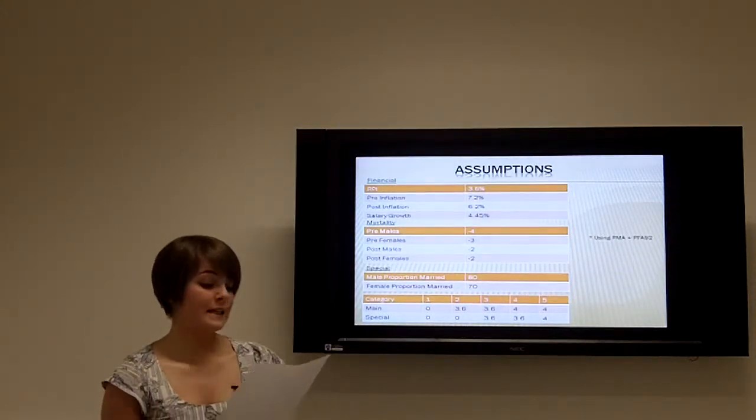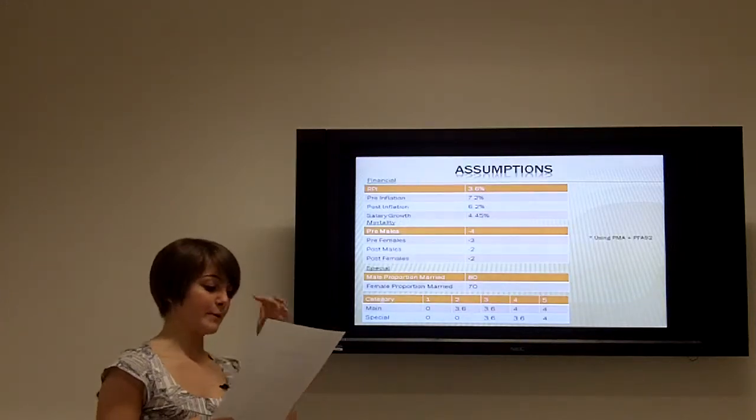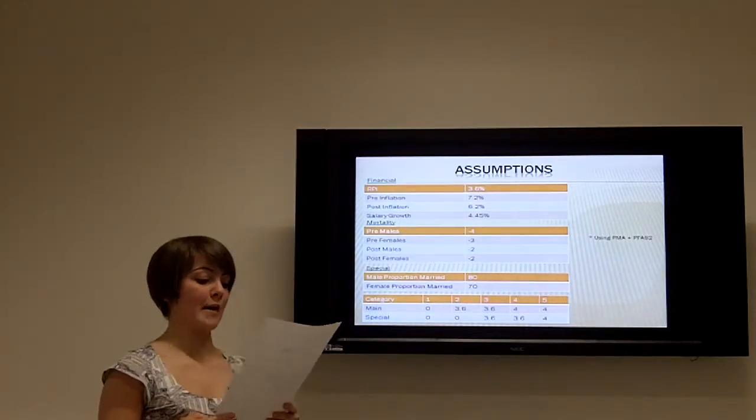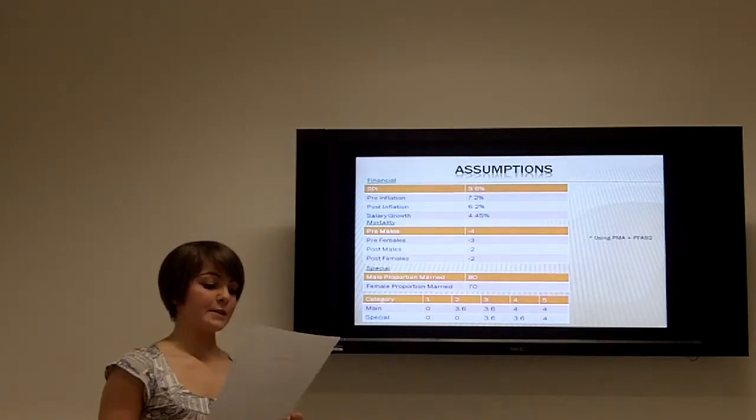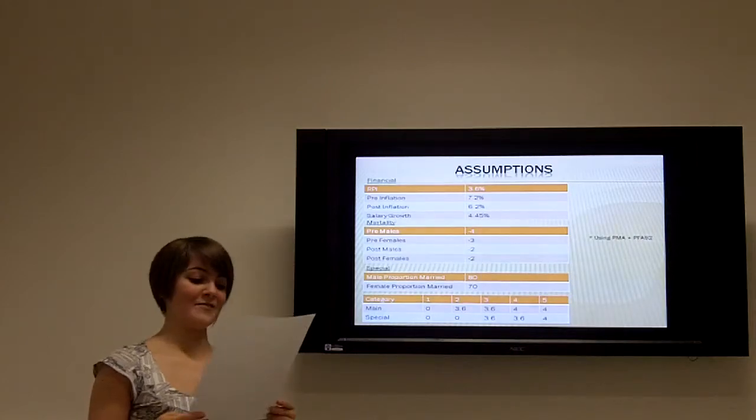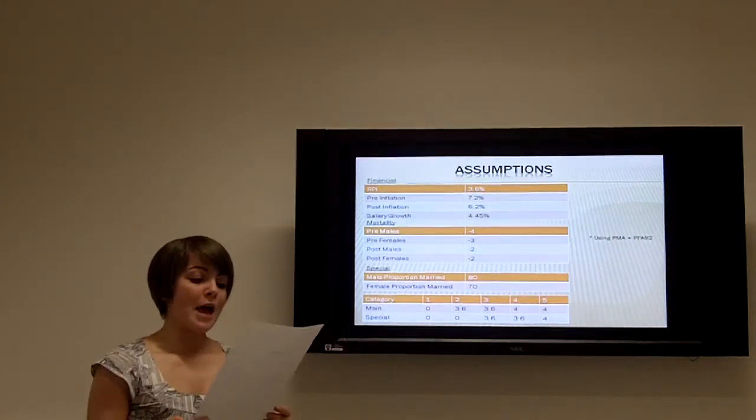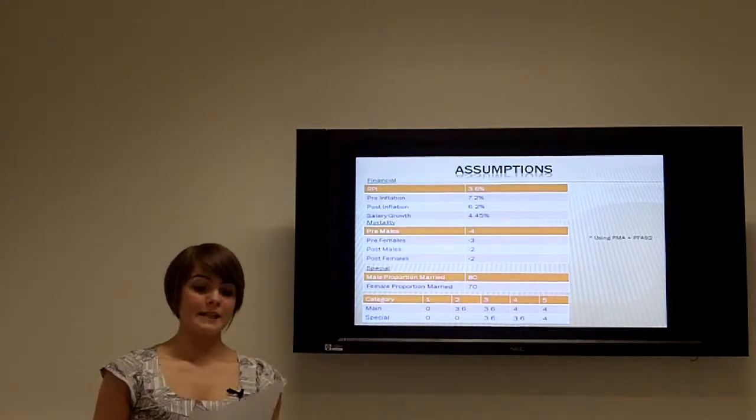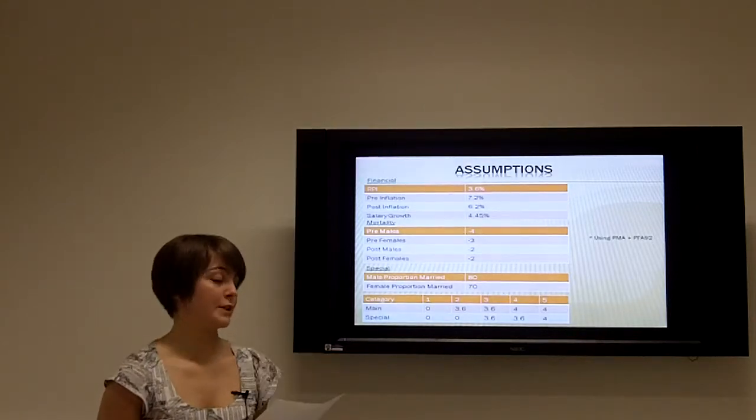The adjustments we made to the mortality of pre-retirement males is minus 4, pre-retired females minus 3, post-retired males minus 2, post-retired females minus 2. It was necessary to do this as life expectancy has increased since when these tables were first calculated.